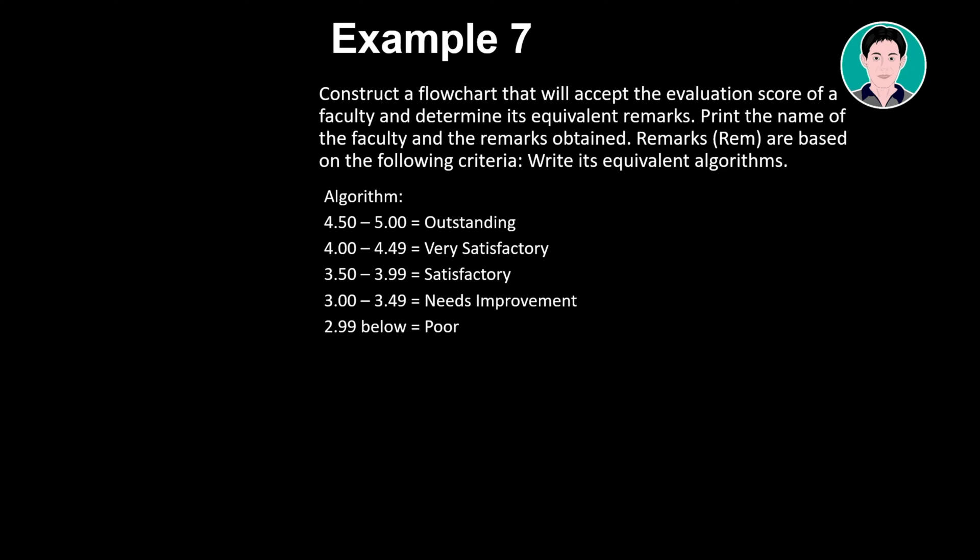4.50 to 5.00 equals outstanding. 4.00 to 4.49 equals very satisfactory. 3.50 to 3.99 equals satisfactory. 3.00 to 3.49 equals needs improvement. 2.99 and below equals poor.